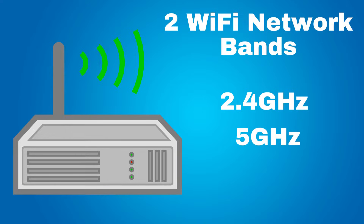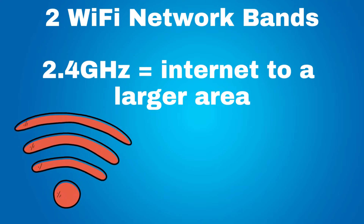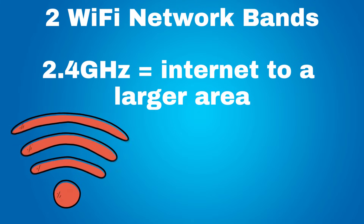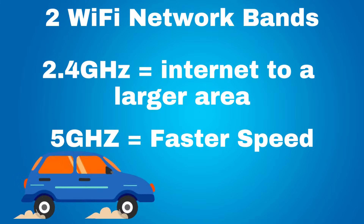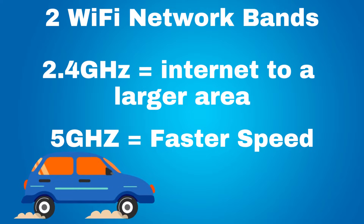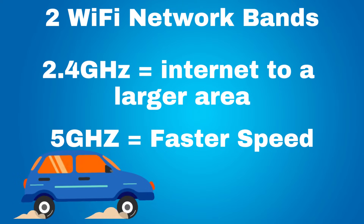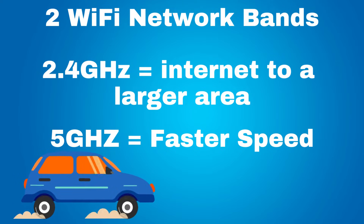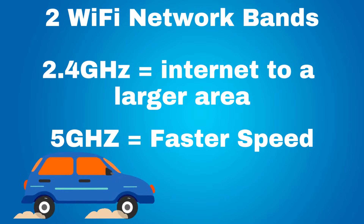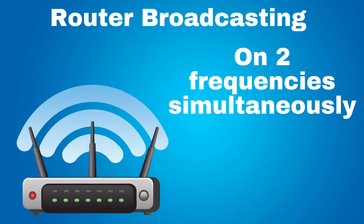The difference between 2.4 GHz and 5 GHz bands: the 2.4 GHz provides internet to a larger area but sacrifices fast internet speed, while 5 GHz provides faster speeds but restricts itself to a smaller area. If you want a longer range for your devices, use 2.4 GHz. If you need higher speed and could sacrifice range, 5 GHz should be used.